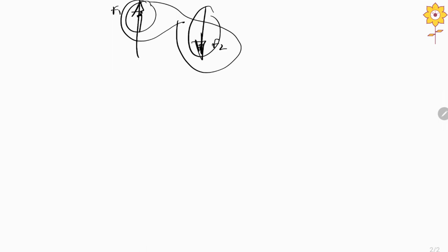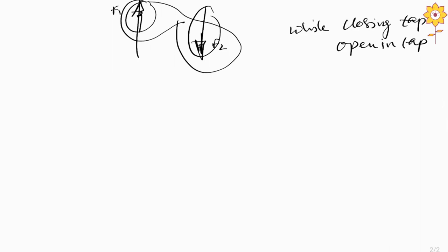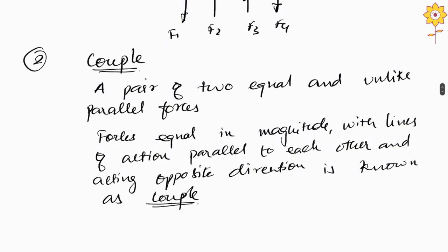One more example: while closing or opening a tap, we can have a couple — two unlike forces of equal magnitude but in opposite direction. Another example would be the steering wheel. When we are steering the wheel, we have a rotational motion, and we have two unlike parallel forces equal in magnitude. So couple is nothing but a pair of two equal and unlike parallel forces where the forces are equal in magnitude but the line of actions are parallel and they act in opposite directions.